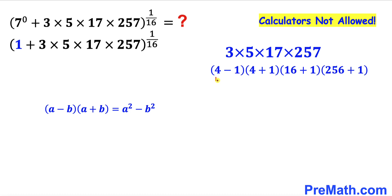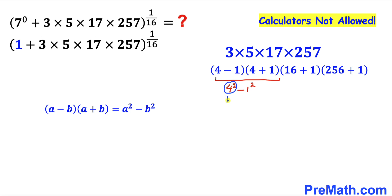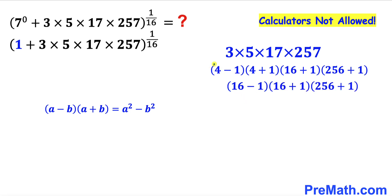Let's focus on this part. If I call (4−1) as (a−b) and (4+1) as (a+b), then this could be written as 4 squared minus 1 squared. Now 4 squared is 16 and 1 squared is 1, so this becomes 16 minus 1. Therefore the part (4−1) times (4+1) has been replaced by 16 minus 1 and the rest is exactly the same.